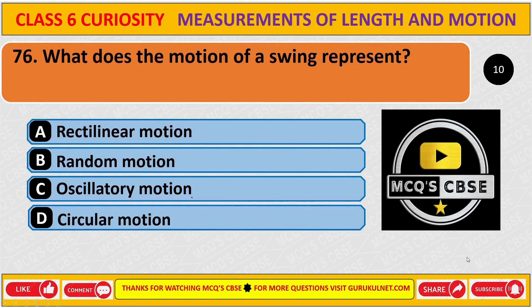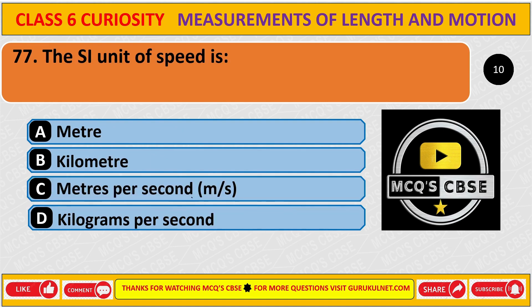What does the motion of a swing represent? The correct answer is C, oscillatory motion.